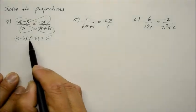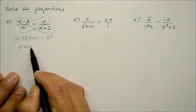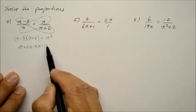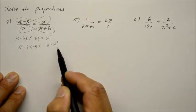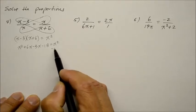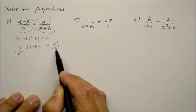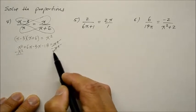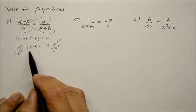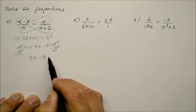Now do my FOIL method. x times x is x squared. x times 6 is 6x. Negative 3 times x is negative 3x. Negative 3 times 6 is negative 18, is equal to x squared. Combine all the like terms. And you know what? Let me do this simultaneously. Let me bring the x squared over at the same time. So I get a 0 on the right side of the equation. So as a result, the degree of 2, they cancel out completely. 6x minus 3x is 3x. Minus 18 is equal to 0.